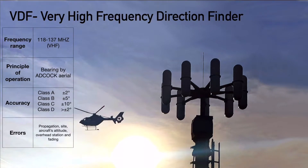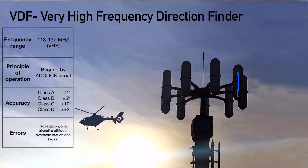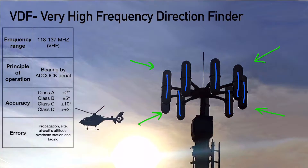VDF is the most basic radio navigation aid that was developed. Whenever a pilot transmits, it gives the true or magnetic bearing of that aircraft — that's it. You ask for your bearing and it provides you with that bearing. The ground instrument has an aerial known as the Adcock aerial, and whenever you transmit this aerial senses the direction from which the signal is coming. The ATC then tells this direction or bearing to the pilot.